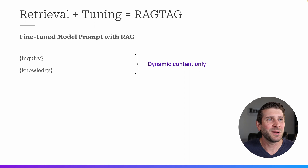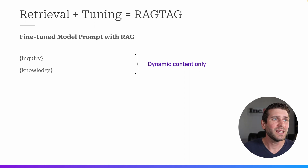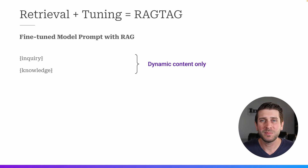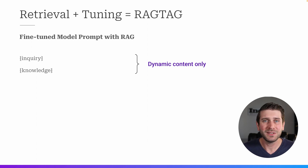Here's a fine-tuned model prompt with RAG — it has just the dynamic content. Everything else has been baked into the model; the model knows what to do with the inquiry and the knowledge. It's going to act like a Q&A bot whether we tell it to or not — we've shown it what to do through our training data.